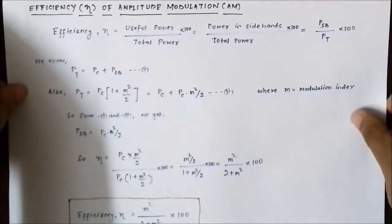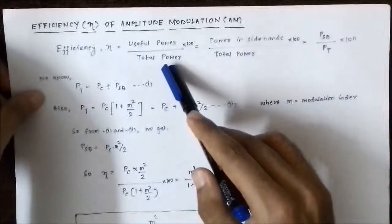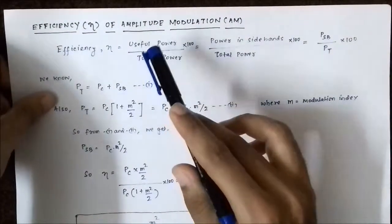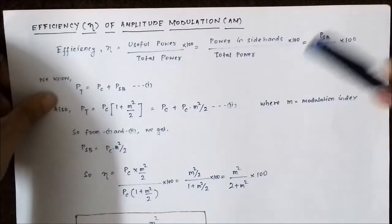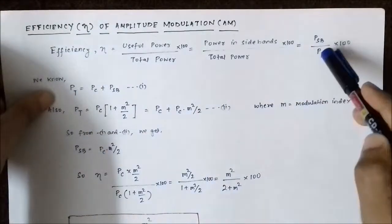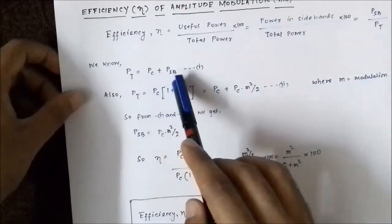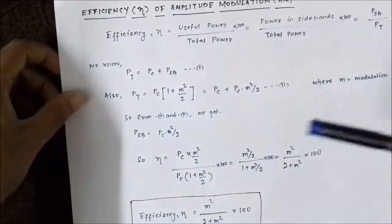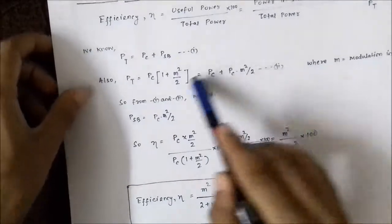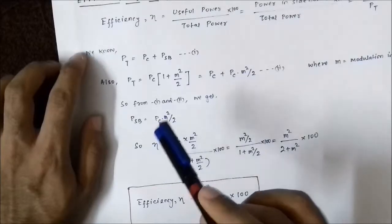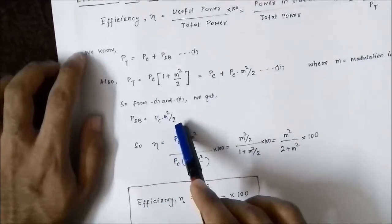Next is the efficiency of amplitude modulation. Efficiency is defined as useful power divided by total power, multiplied by 100. The useful power is the power in the sidebands, and total power includes both the carrier and sidebands. So efficiency η = (Psb / Pt) × 100. We know Pt = Pc·(1 + m²/2), and expanding: Pt = Pc + Pc·m²/2. Comparing, the power in the sidebands equals Pc·m²/2.